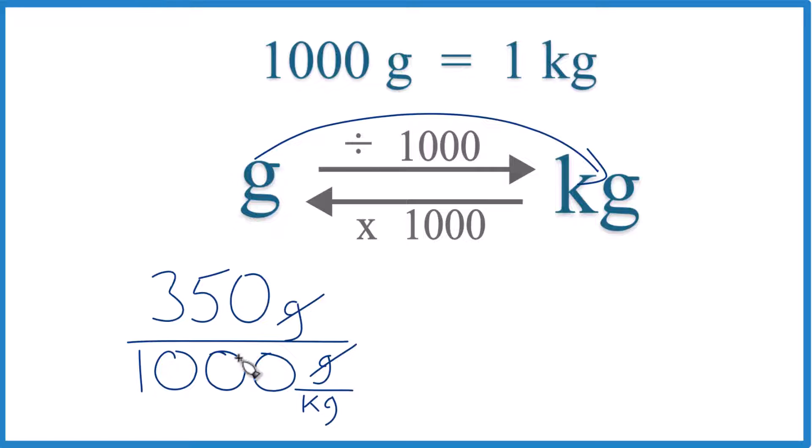And we're going to divide 350 by 1,000. So we can go 1, 2, 3. That gives us 1. And up here, 1, 2, 3. And 350 grams, that equals 0.35 kilograms. We don't need that extra 0 here.